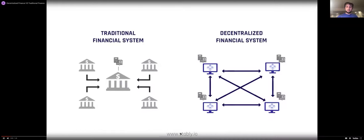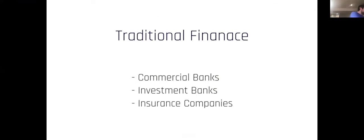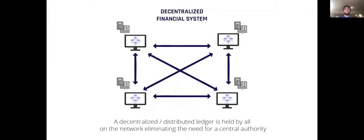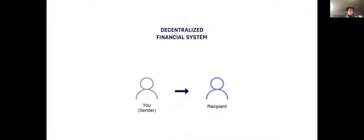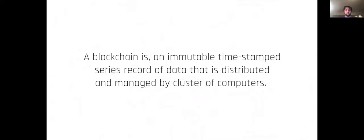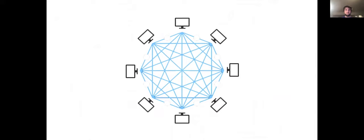Traditional finance and decentralized finance — what you need to know. What is traditional finance? It's what we're used to: banks and other financial institutions that act like the middleman. There's you, the middleman like your bank, some form of payment channel like Visa or MasterCard, the recipient's bank, and the recipient. Decentralized finance essentially accomplishes the same purpose but without the financial institution — just you and the recipient. No middleman, and the transaction is done on the blockchain. A blockchain is an immutable timestamped series record of data that is distributed and managed by a cluster of computers.